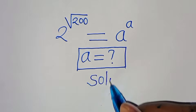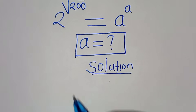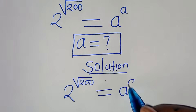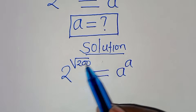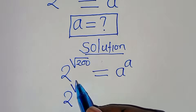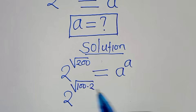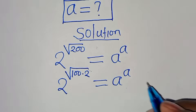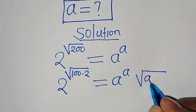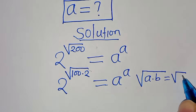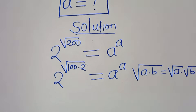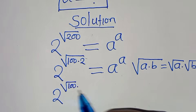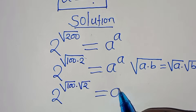We have 2 to the power of square root of 200 equal to a to the power of a. We can express the square root of 200 as square root of 100 times 2. Using the property that square root of a times b equals square root of a times square root of b, we get 2 to the power of square root of 100 times square root of 2, equal to a to the power of a.